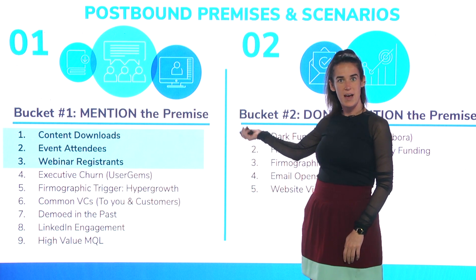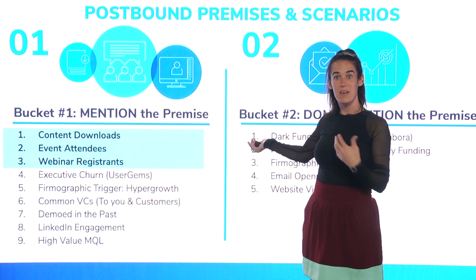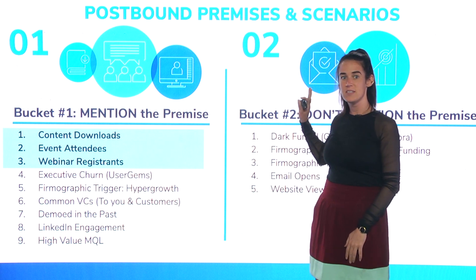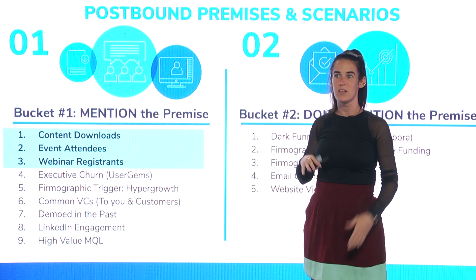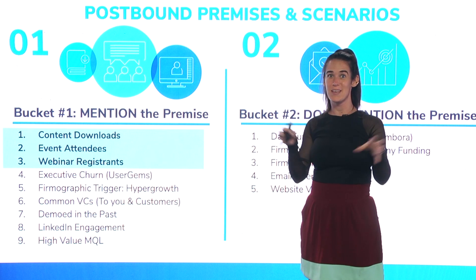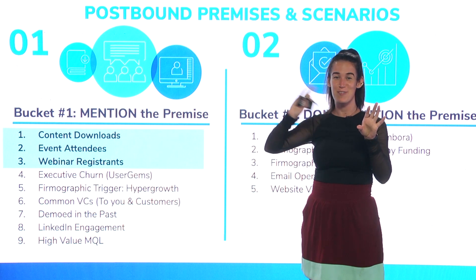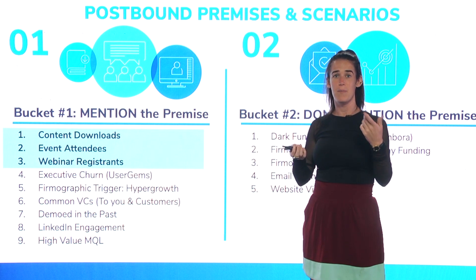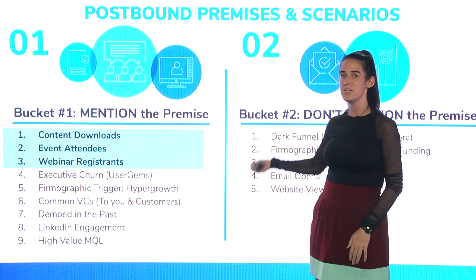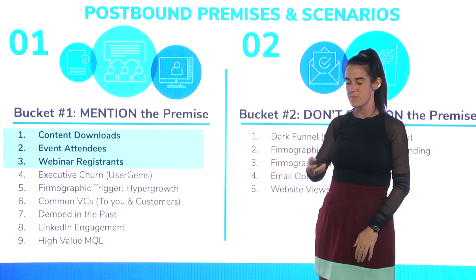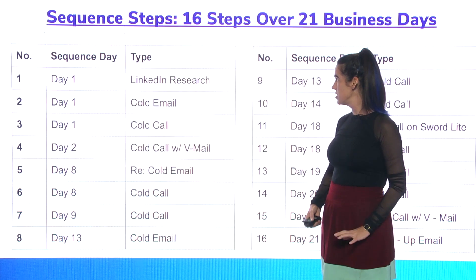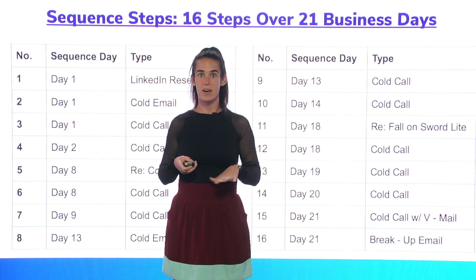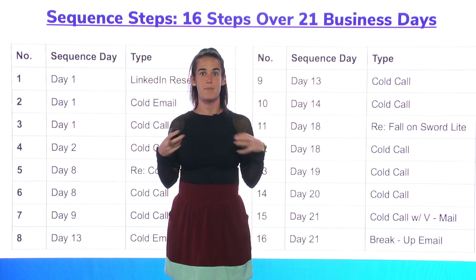These are all the different sequences I'm building into my playbook whenever I have a team. Some interesting ones include high-value MQL, demoed in the past, common VCs with me as a company, or common VCs with my customers. This is an exhaustive deck and I have a sequence built for each one — the same structure, the same touch points, the same number of calls and emails — but with a little different messaging based on the personalized premise and the postbound action they took from marketing.